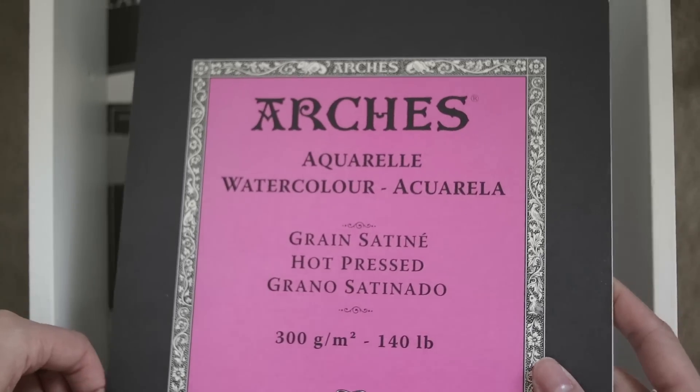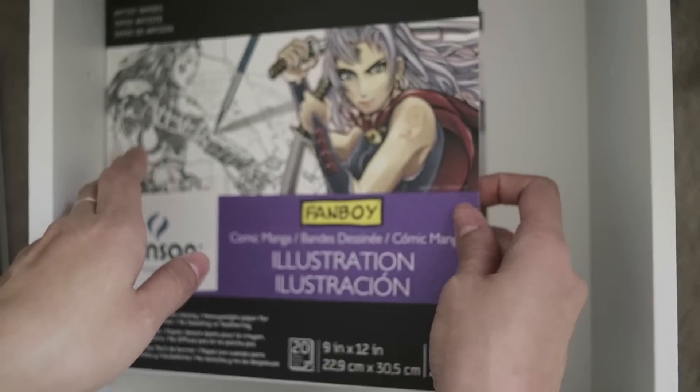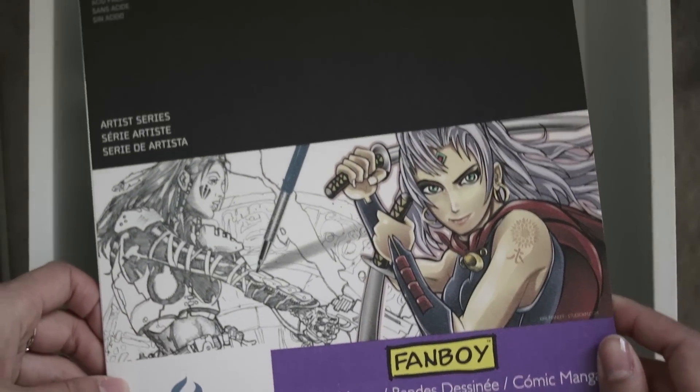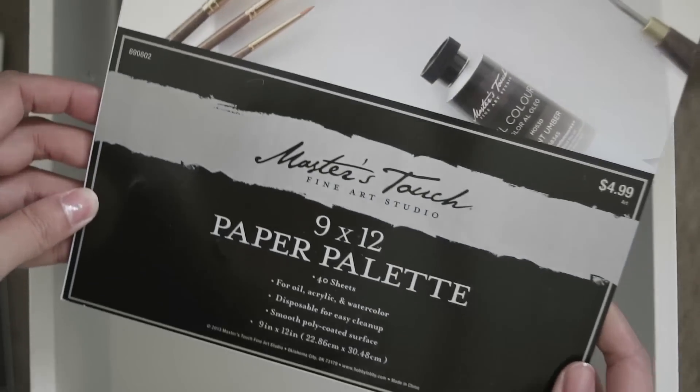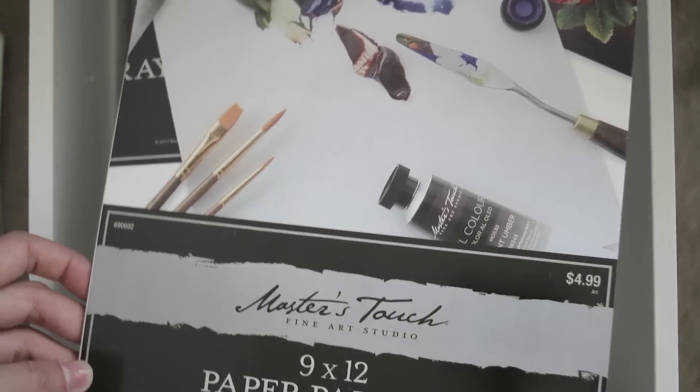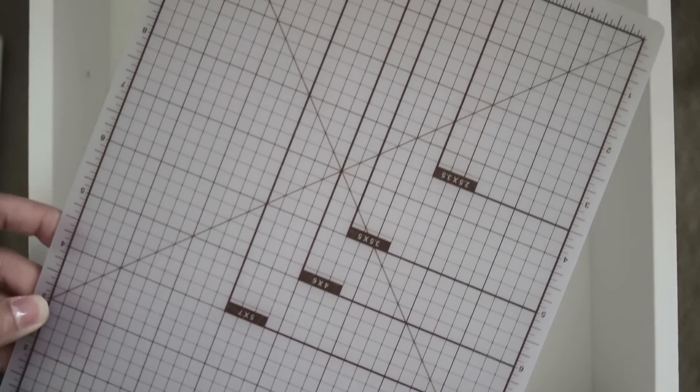And then these are the watercolor papers that I use. The Arches is my favorite one. The Hot Pressed. And then this one, I don't use too often. Just kind of like one I would just use to play around with. It's an illustration board. And then I have some paper palettes. And this is a cutting board that I use from time to time.